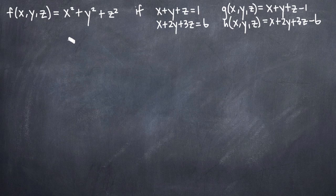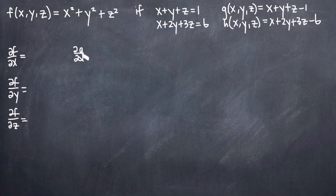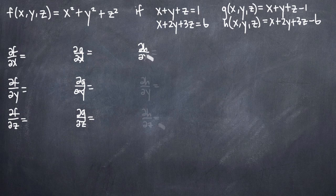Our second step is to take partial derivatives with respect to all three variables of all of our functions — our original function f of x, y, z and our two constraint equations. We'll set up a table with the partial derivatives of f, g, and h with respect to x, y, and z.